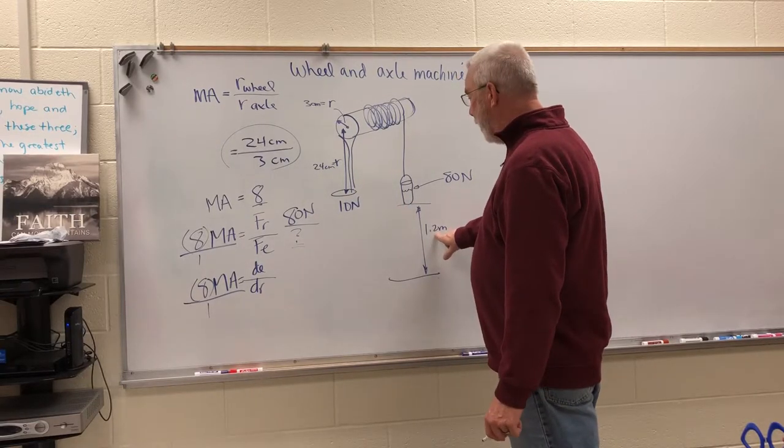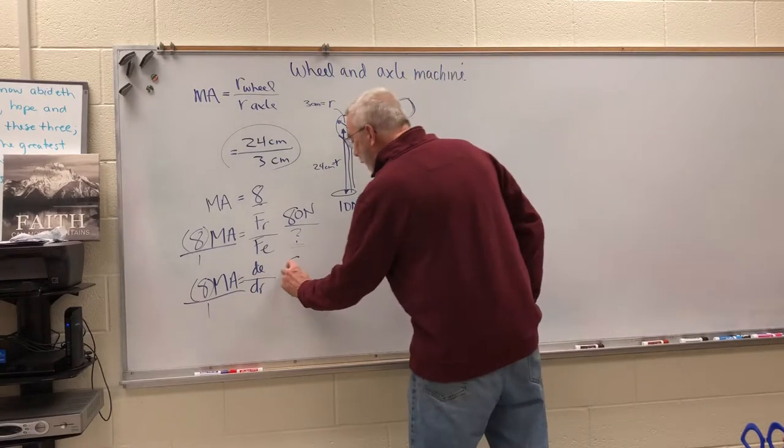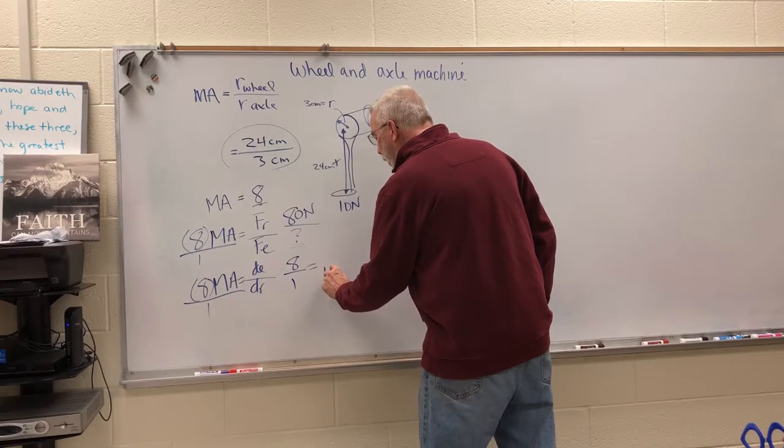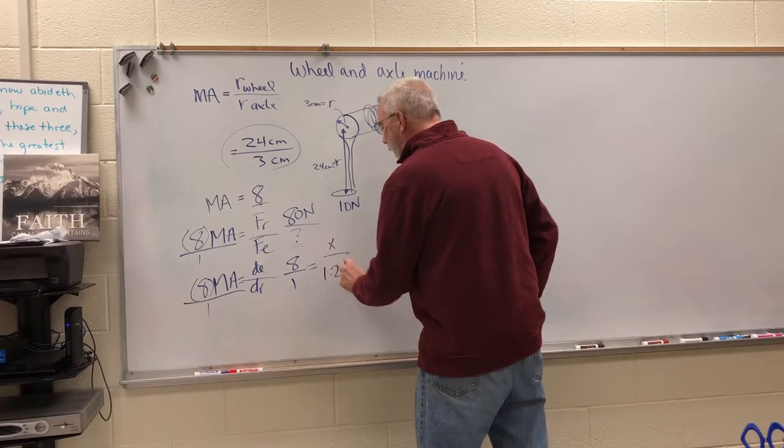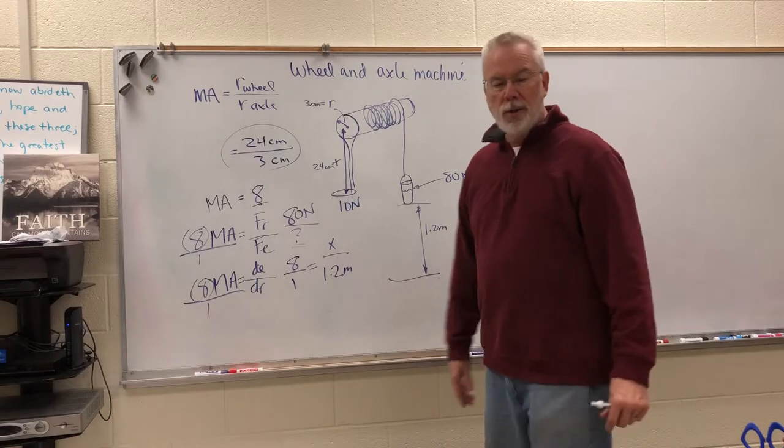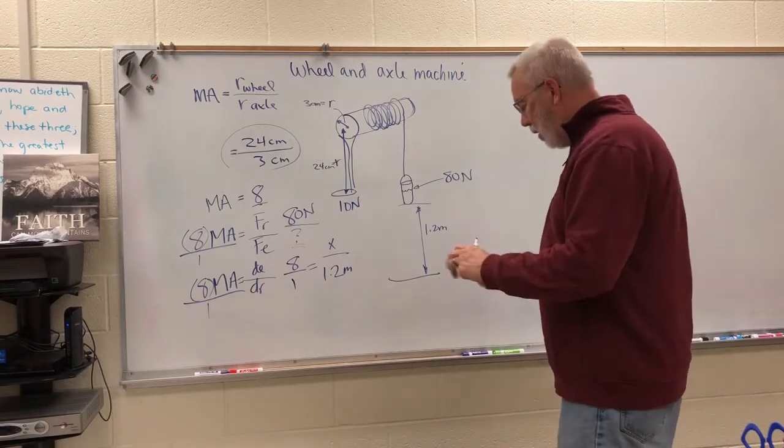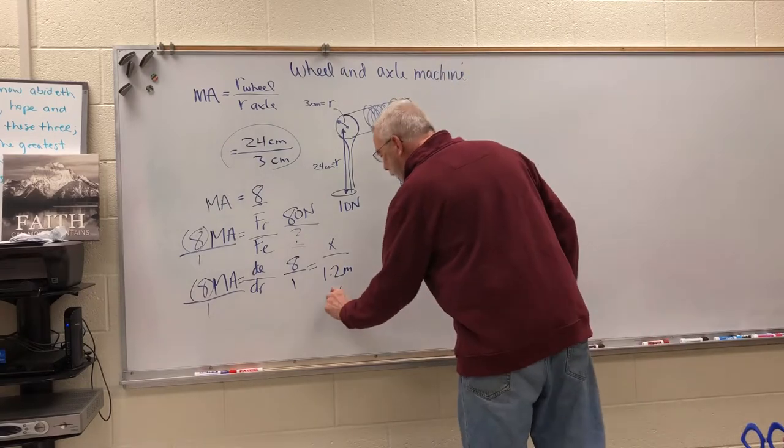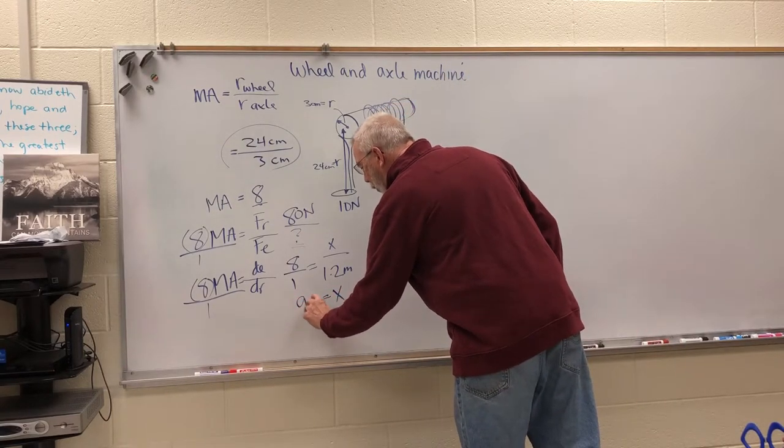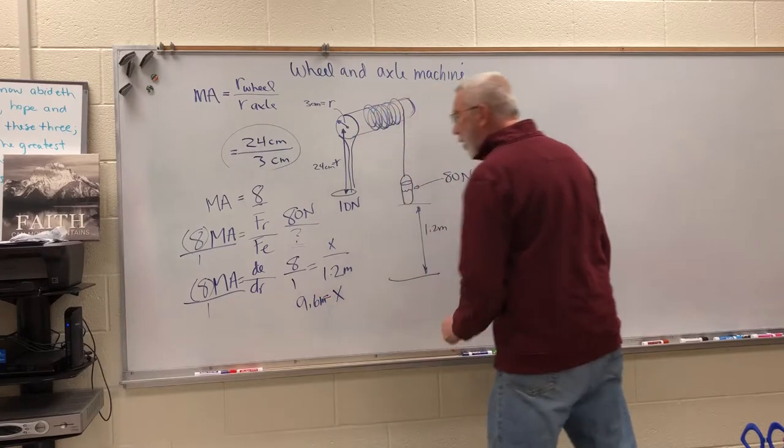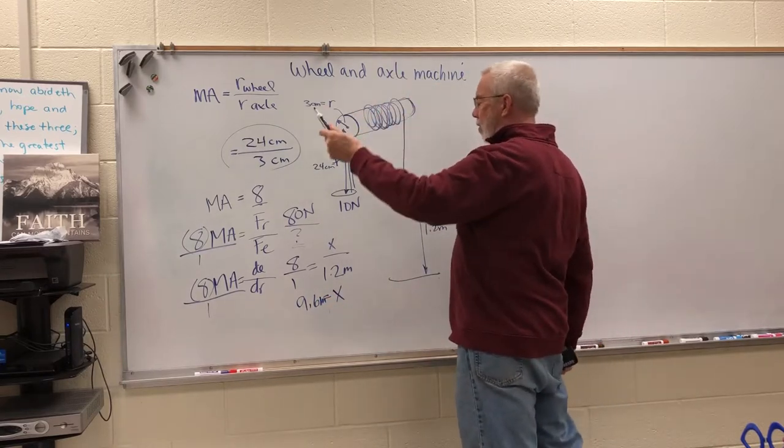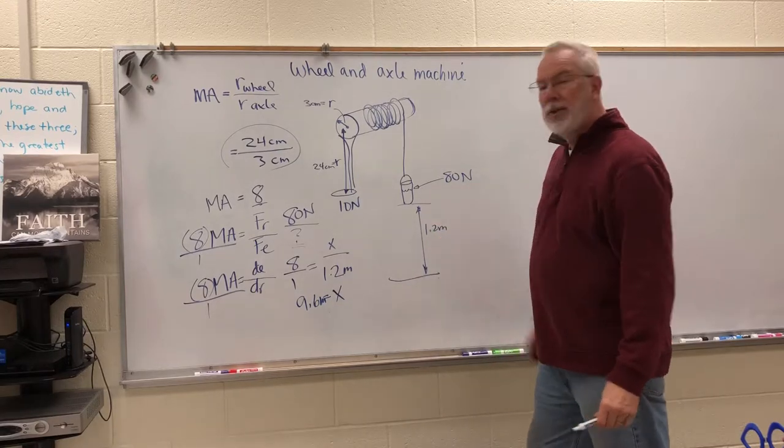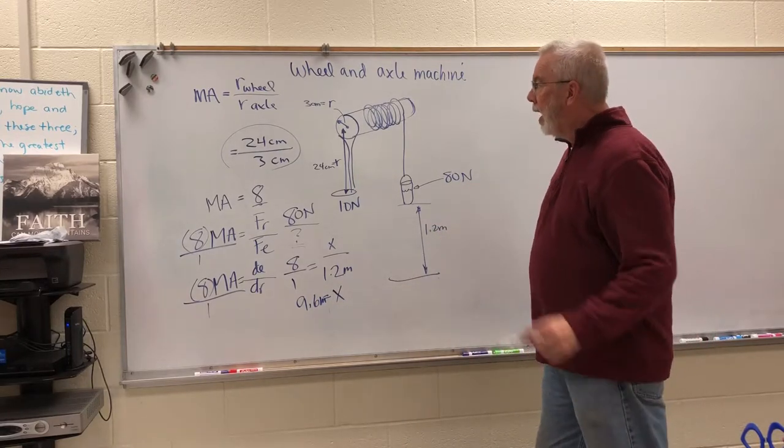And then if we're trying to move this thing 1.2 meters, we've got 8 over 1 equals 1.2 meters over x. And so we're going to cross multiply and 8 times 1.2 is 9.6, so x equals 9.6 meters. So we're going to turn that handle 9.6 meters in order to get the bucket to just rise 1.2 meters.